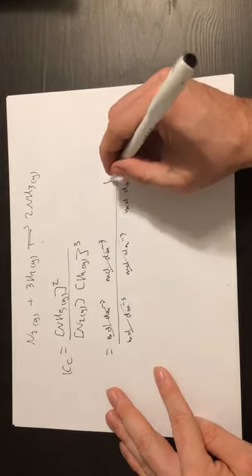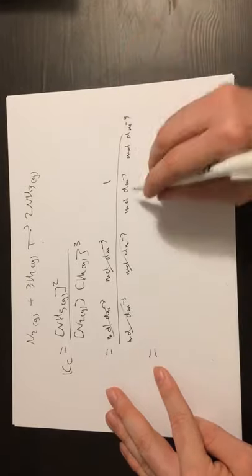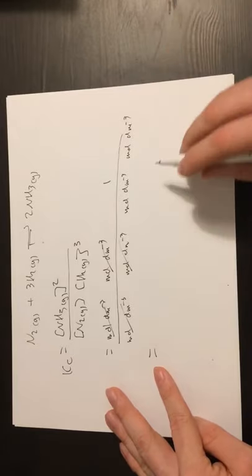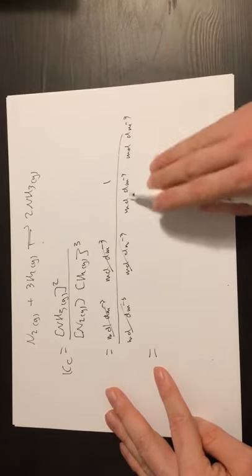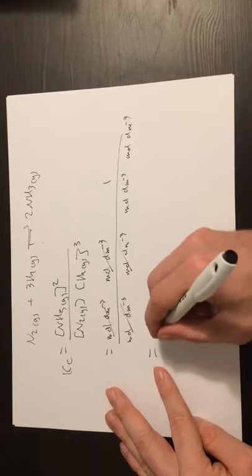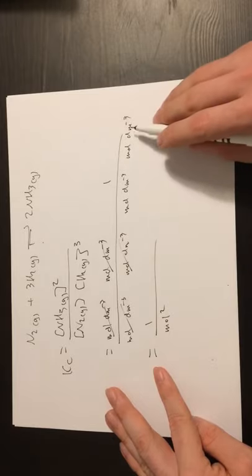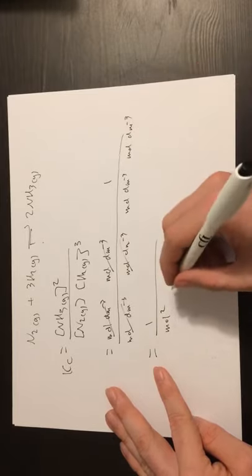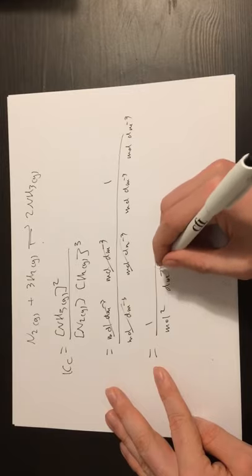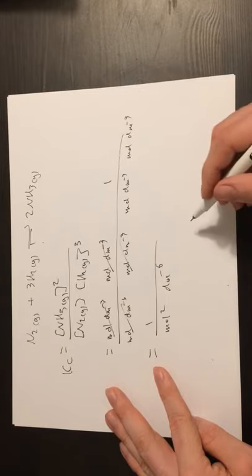And that will leave us with the number one on the top. But we can't just have these terms on the bottom separate like that. So we're going to need to group these concentrations together. So I've got moles and moles, so that will give me one over moles squared. Decimetres to the minus three, decimetres to the minus three, that will give me decimetres to the minus six. So I've grouped my concentrations together.